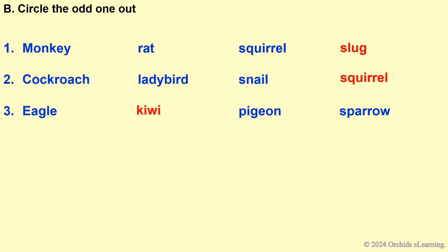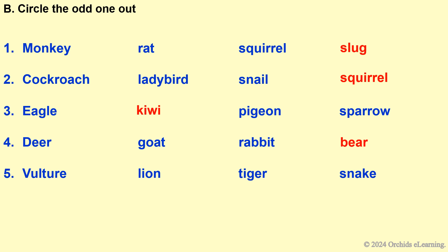Deer, goat, rabbit — odd one out: bear. Vulture, lion, tiger — odd one out: snake.